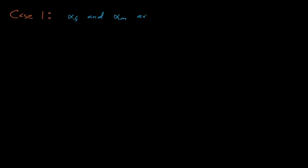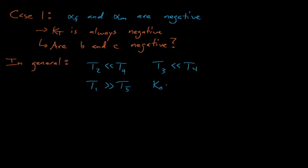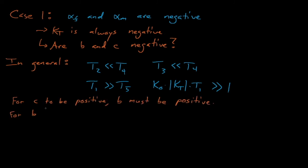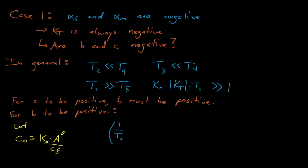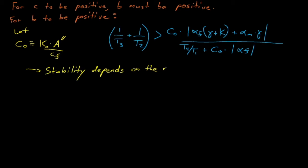In case one, both temperature reactivity coefficients are negative, which means k_t will be negative regardless of the magnitude of our reactivity coefficients. So what about B and C? Using some generally reliable assumptions — T2 much less than T4, T1 much greater than T5, T3 much less than T4, and k0 times the absolute value of k_t times T1 much greater than 1 — for C to be positive, B must always be positive. And for B to be positive, in general, 1/T3 plus 1/T2 must be greater than an expression that is a function of alpha_f and alpha_m. This tells us that our system can become unstable if alpha_m and alpha_f are too large, even if they are negative.